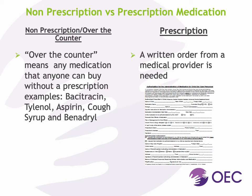In addition to distinguishing medication by the route they are administered, medications fall into two categories. First, there are those that are non-prescription, or more commonly referred to as over-the-counter medications. These medications can be bought without a prescription. Examples of non-prescription medications include Bacitracin, Tylenol, Aspirin, Cough Syrup, and Benadryl. The second category are those that are prescribed by a medical provider. A person cannot go into a store and buy these medications without a prescription. Examples of prescription medications include Ritalin, Concerta, birth control pills, and asthma medication.